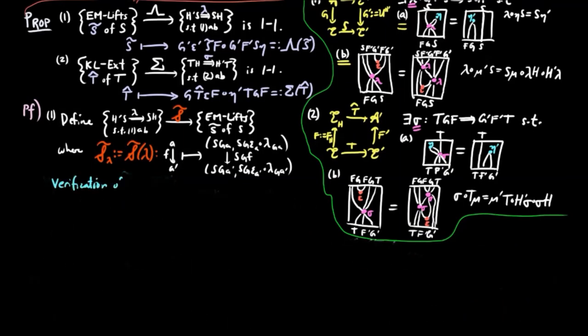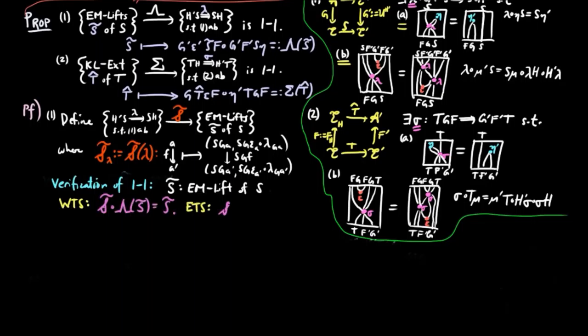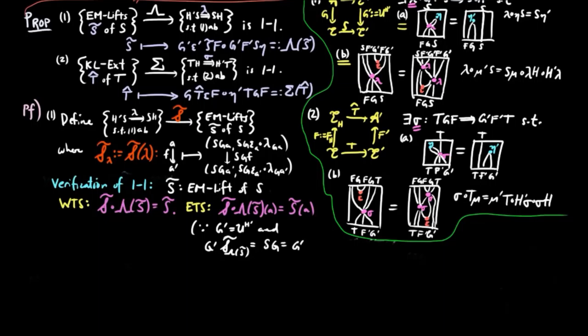We still have to verify the one-to-one correspondence. To do this, we show that S̃ is the left and right inverse to Λ. To show it is a left inverse, it is enough to show S̃(Λ(S̃))(A) is equal to S̃(A), since G' is defined to be UH'. And G'·S̃(Λ(S̃)) equals SG, which is also equal to G'·S̃, because S̃(Λ(S̃)) and S̃ are both Eilenberg-Moore lifts of S.